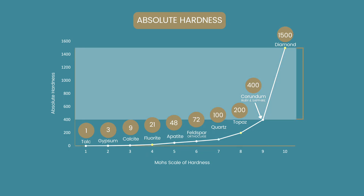With this scale you can see that diamond is exponentially harder than all other minerals, measuring nearly four times the hardness of ruby and sapphire.